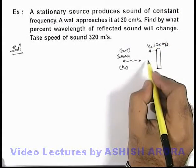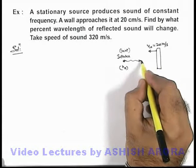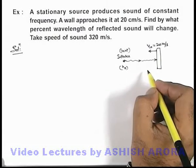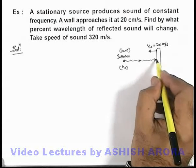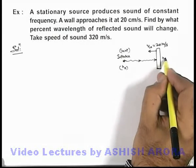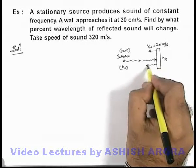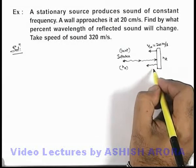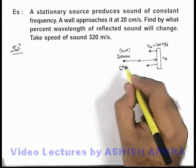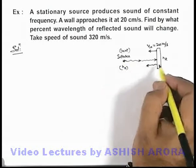In this situation, as we already studied, when the sound reaches the wall, we consider the wall as a moving observer and let us consider it receives a frequency nr. And then it reflects, or it emits the same frequency nr as a moving source which is again heard by an observer in front of this wall.